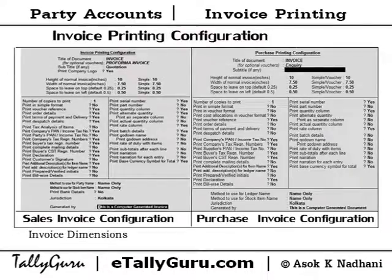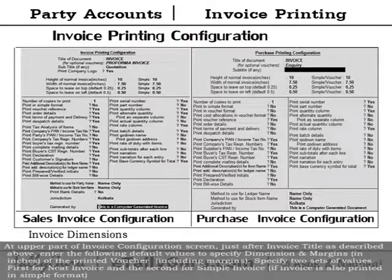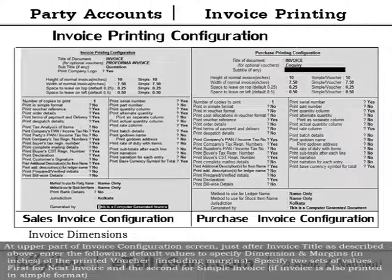Invoice dimensions: at the upper part of the invoice configuration screen, just after the invoice title section, enter the following details to specify the dimensions and margins in inches of the printed voucher, including the margin. Supply two sets of values: the first for the neat invoice format and the second for the simple format, if the invoice is also printed in simple format.